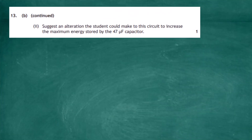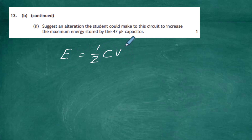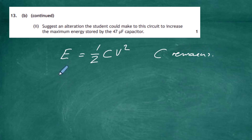Question 13 part b continued. We are asked to suggest an alteration the student could make to increase the maximum energy stored by the 47 microfarad capacitor. The supply voltage can go from 0 to 15 volts. Since E = ½CV² and the capacitance C remains the same, the only alteration available is to increase the supply voltage.